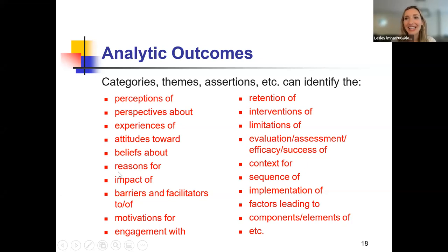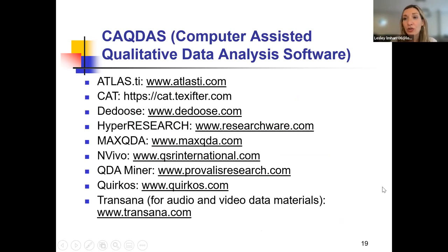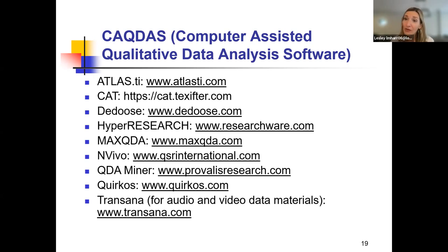So where were we? We were in analytic outcomes. I want to think about what could we include within our categories, themes, or assertions — this could be perceptions of, retention of, interventions of, limitations of, and so on. Just another FYI: I want you to know that we are not suggesting you use what's known as CAQDAS — Computer Assisted Qualitative Data Analysis Software. I teach a PhD-level course on that and it's not needed here, but it's good for you as researchers to know that these exist. There are many different types of qualitative data analysis software — some are free, some are at a very expensive cost — so just know they're out there if you want to use them in the future.